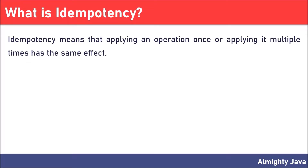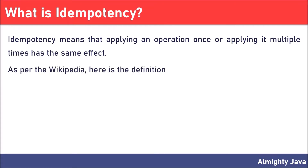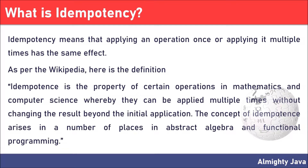Idempotency means that applying an operation once or applying it multiple times has the same effect. As per Wikipedia, here is the definition: Idempotence is the property of certain operations in mathematics and computer science whereby they can be applied multiple times without changing the result beyond the initial application. The concept of idempotence arises in abstract algebra and functional programming.